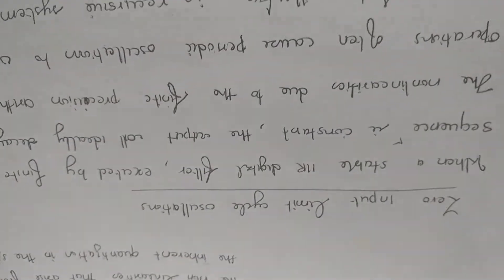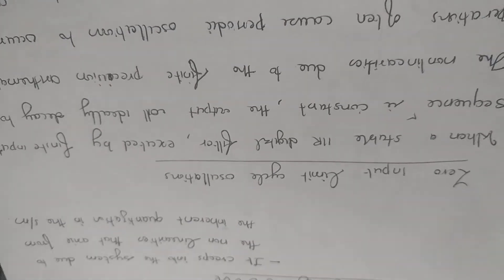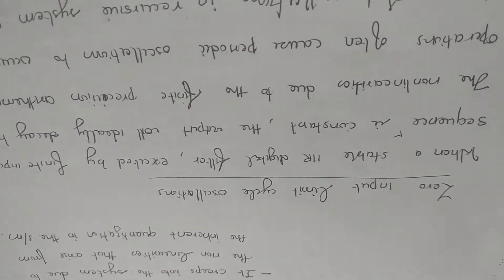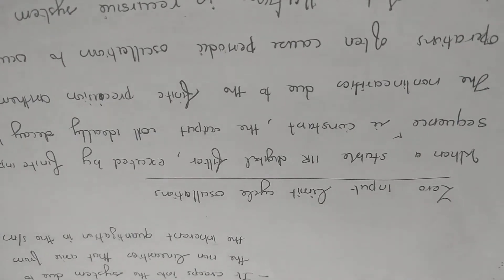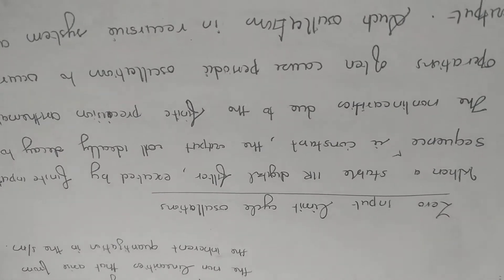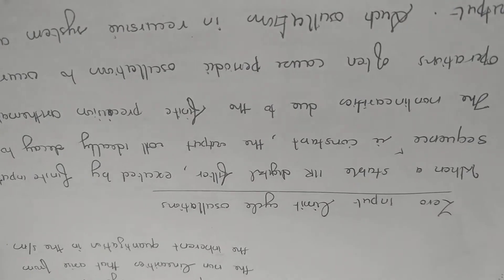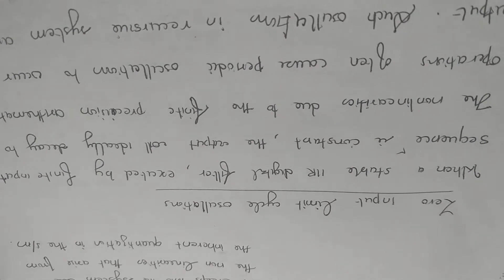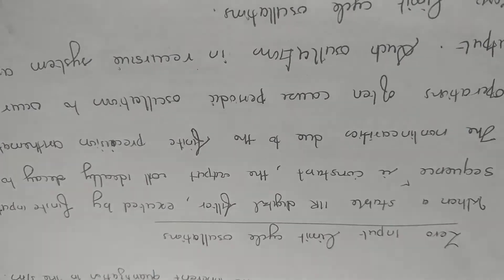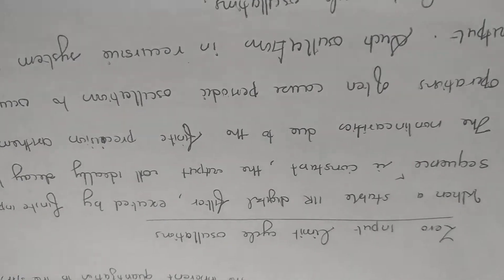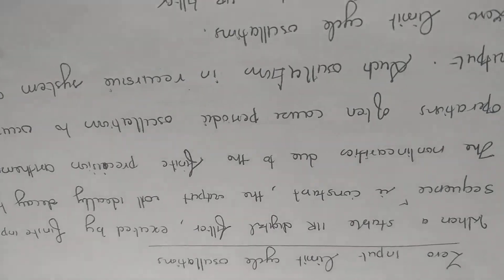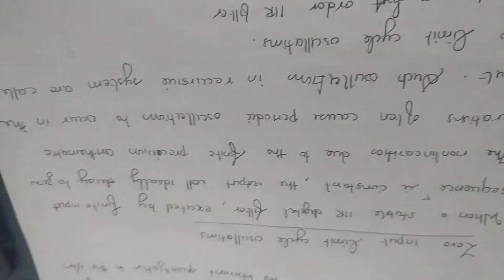Then comes zero input limit cycle oscillations. When we have a stable digital IIR filter, ideally the output should decay to zero slowly. The non-linearity is due to finite precision arithmetic operations, and this often causes periodic oscillations to occur in the output.